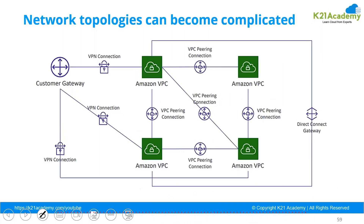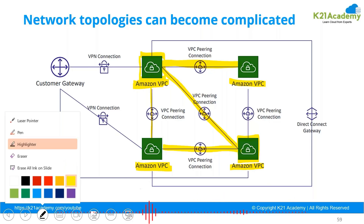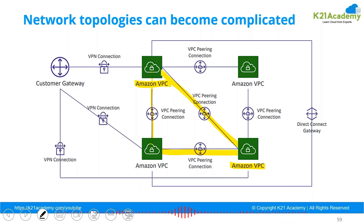Without the Transit Gateway, if one VPC is trying to communicate with another VPC, we can have a peering connection. Each pair of VPCs that need to communicate requires its own peering connection, because VPC peerings are non-transitive in nature. Just because VPC A is connected to VPC B and VPC B is connected to VPC C does not mean A and C can communicate with each other.